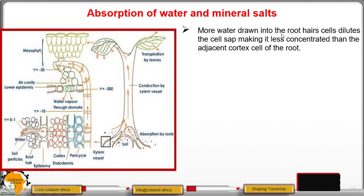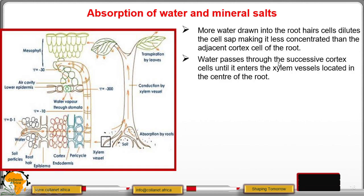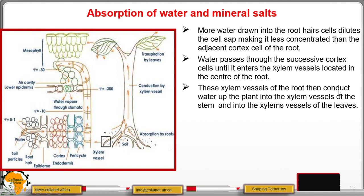More water is drawn into the root hair cells, which dilutes the cell sap, making it less concentrated than the adjacent cortex cells. Water then passes through the successive cortex cells until it enters the xylem located in the center of the root. The xylem vessels of the root conduct water up the plant into the xylem vessels of the stem, and into the xylem vessels of the leaves.